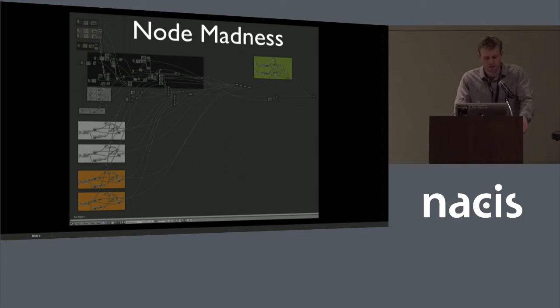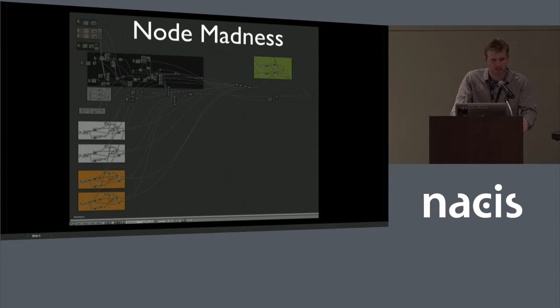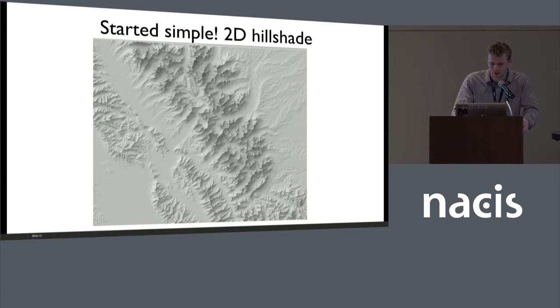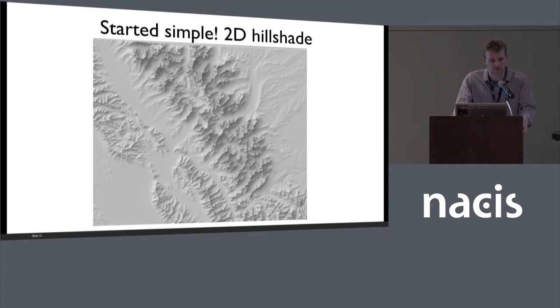But if there's one thing you take away from my presentation today, it's that I'm a complete noob at this, and I feel like I've been able to do some fun stuff with it. My thought is if I can get 10% as good at 3D modeling and animation as these Blender gurus, then I'll be able to make some pretty cool maps. So I started simple — I started with Daniel's tutorial doing basic 2D hillshades, not really changing the default parameters much. And I see these all over; lots of newsrooms are using these for hillshades now. It's a lot more aesthetically pleasing than some of the other default hill shading algorithms out there.